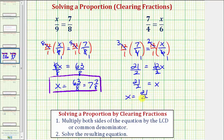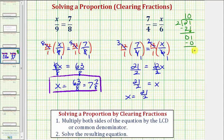Let's also express this as a mixed number. To do this, we'd have 21 divided by two. There are ten twos in 21 — one times two is two, two minus two is zero, bring down the next digit of one, there are zero twos in one, so zero times two is zero, and we have a remainder of one. This means the quotient is ten and one-half. So 21 halves equals ten and one-half. As a fraction, our solution is 21 halves; as a mixed number, the solution is ten and one-half.